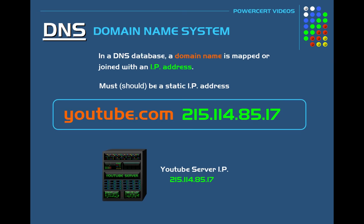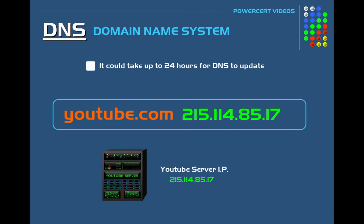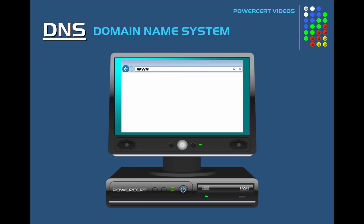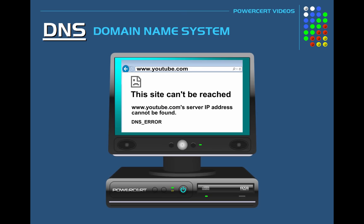This may not sound like a big deal. However, the problem is that it could take up to 24 hours for DNS to update their database with the new IP, and that is a problem. Because that means YouTube will lose up to 24 hours worth of business until DNS does the update. This is the main reason why websites, organizations, and companies use static IP addresses and not dynamic IP addresses.